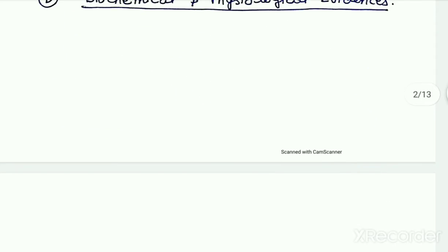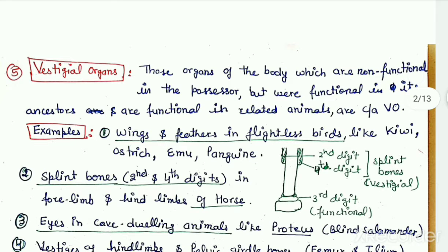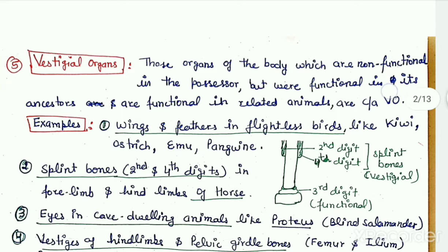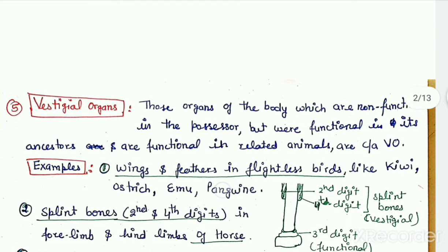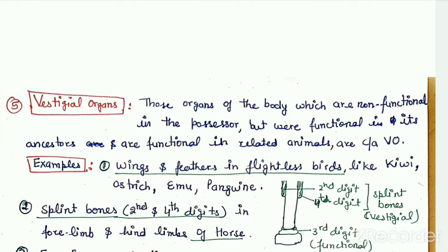First of all, what are the vestigial organs? These are the organs which are non-functional in the possessor but were functional in its ancestors and are also functional in the related animals. These vestigial organs are non-functional in the organism in which they are currently present, but in its ancestors they were functional.